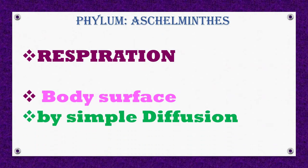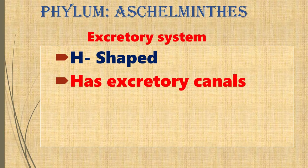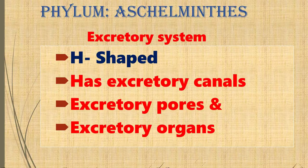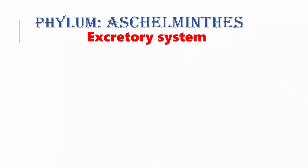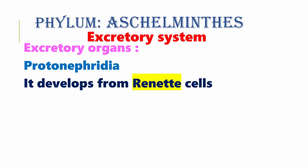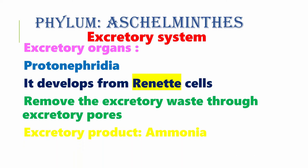Respiration occurs through the general body surface by simple diffusion. The excretory system of roundworms consists of protonephridia, which develop from a special large-sized cell termed renette cells. Their main function is to remove excretory waste products through excretory pores. The excretory product is ammonia, though Ascaris sometimes also releases urea.